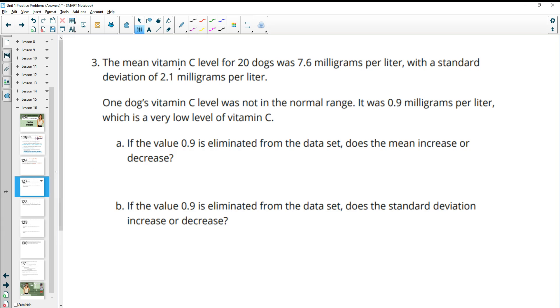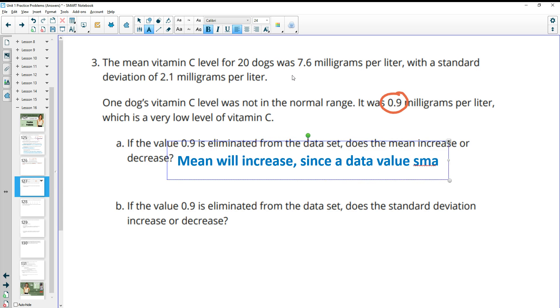Number three. The mean vitamin C level for 20 dogs was 7.6 milligrams per liter, with a standard deviation of 2.1. One of the dogs' vitamin C level was not in the normal range. It was 0.9 milligrams per liter, which is really low. So if the value 0.9 is eliminated from the data set, does the mean increase or decrease? So if we remove a small data value, 0.9 is smaller than the 7.6, that means the mean will increase since a data value smaller than the mean was removed.